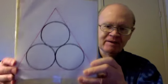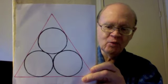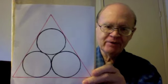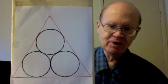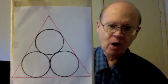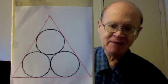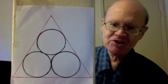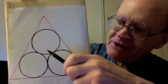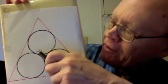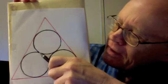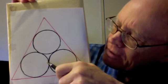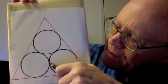This is a geometry challenge. We have here three circles, all the same size, and tangent to one another — that means barely touching one another — here, here, and here.